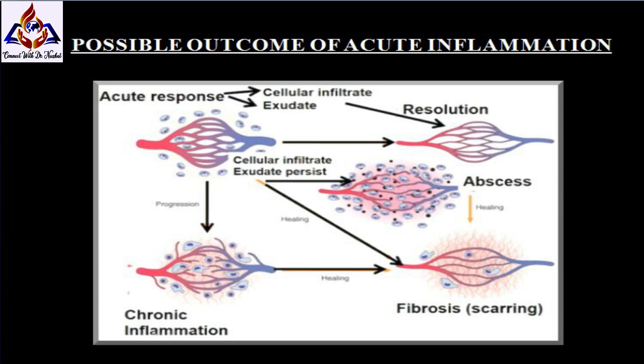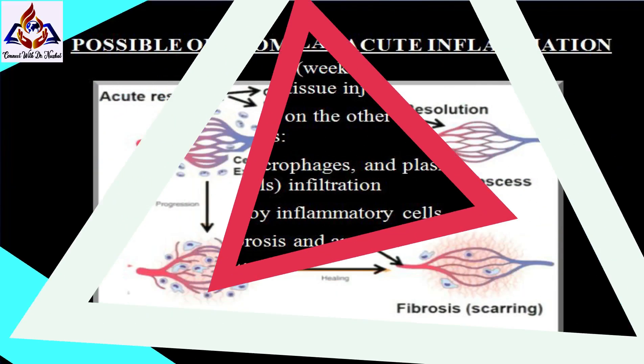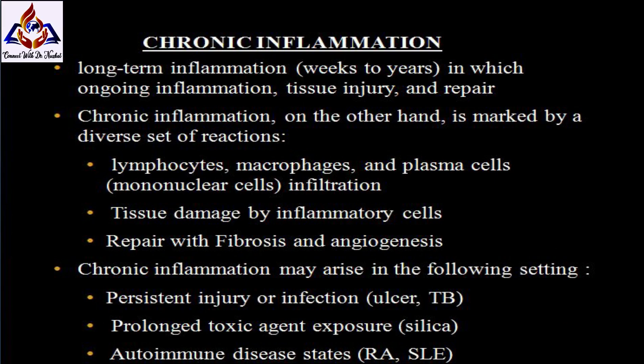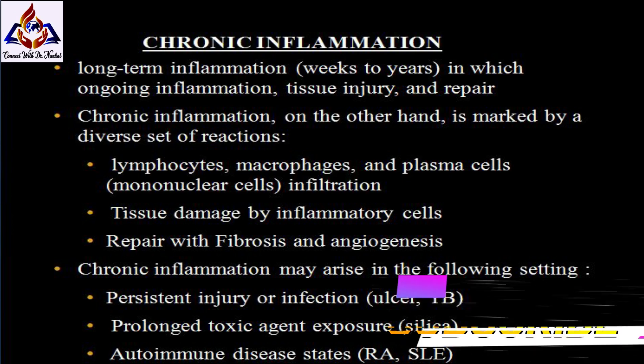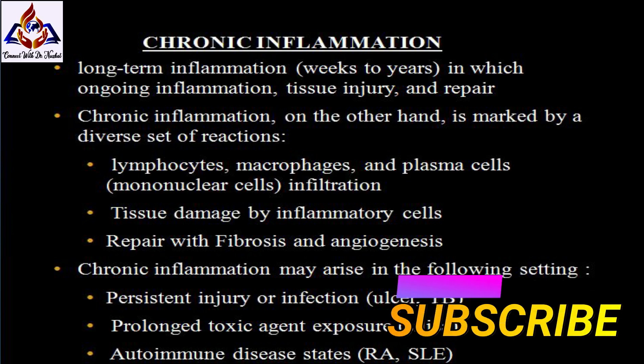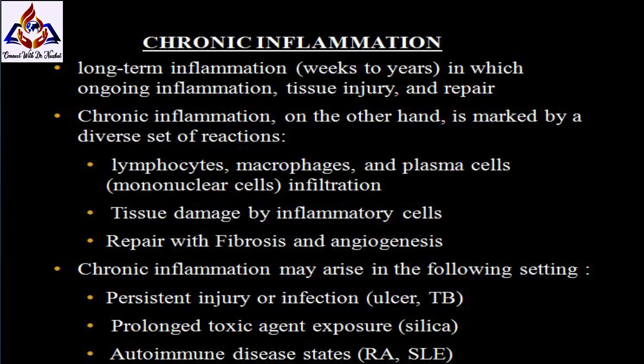In acute inflammation, the process is characterized by vasodilation, fluid exudation, and neutrophil infiltration. These processes are activated and amplified by a series of intracellular and extracellular factors that tightly coordinate the inflammatory process. The innate immune system responds rapidly to infection or injury. Chronic inflammation is a long-term inflammation lasting weeks to years, in which ongoing inflammation, tissue injury, and repair — often by fibrosis — all occur at the same time.